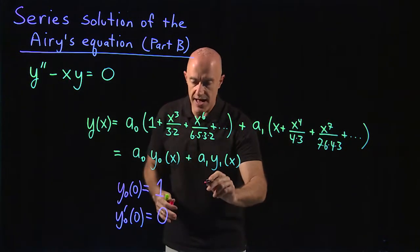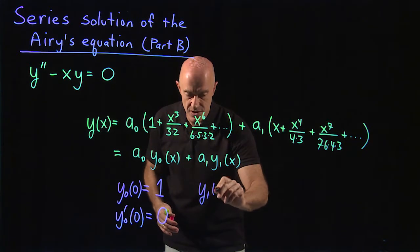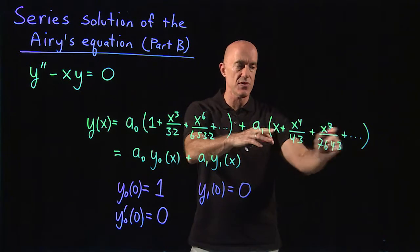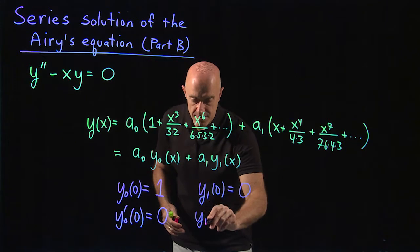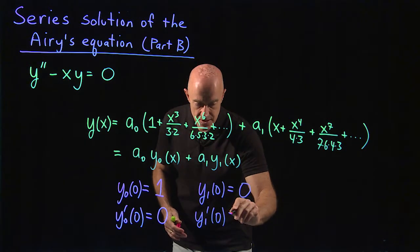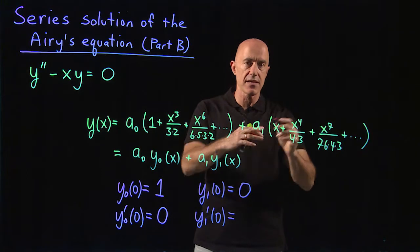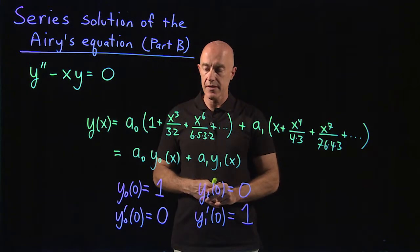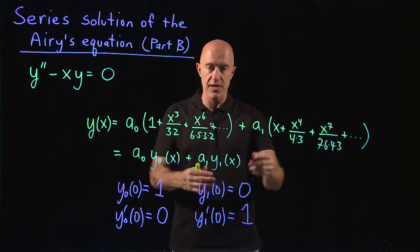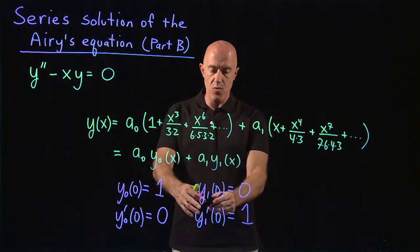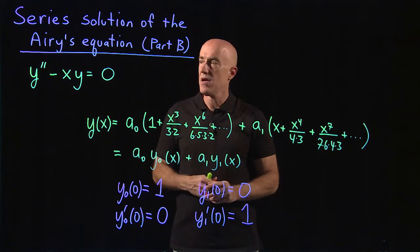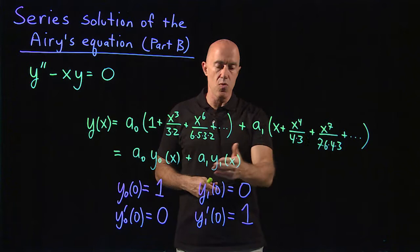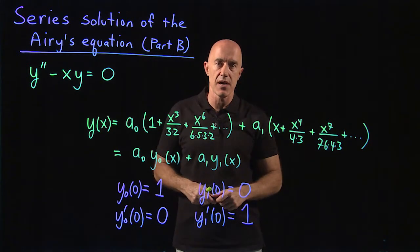For this one, you have y1 of 0, plugging in x equals 0, all terms have an x in them, so that would be 0. And y1 prime of 0, taking the derivative, the derivative of x is 1, all the other terms will go to 0, so that will be 1. So if you use the initial conditions y1 of 0 equals 0 and y1 prime of 0 equals 1, and you solve this differential equation numerically, you'll get the y1 of x represented by this power series.